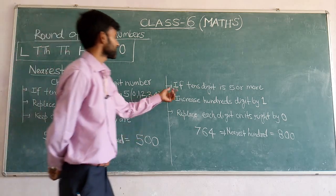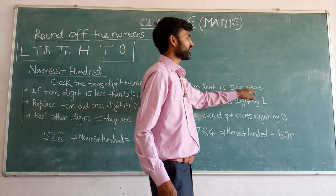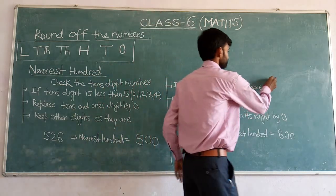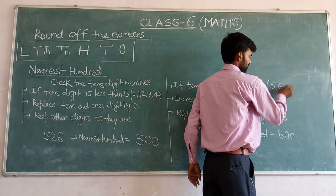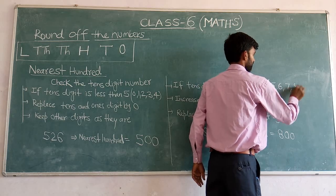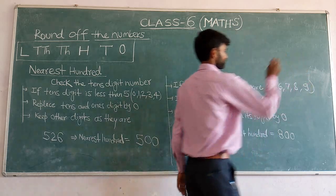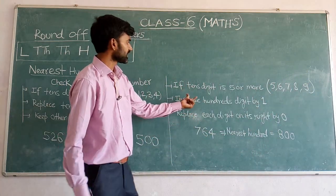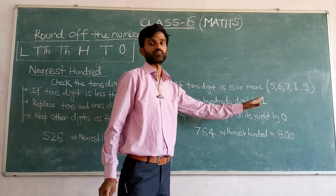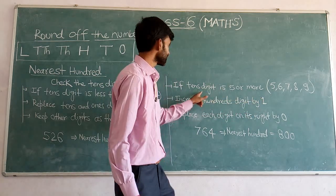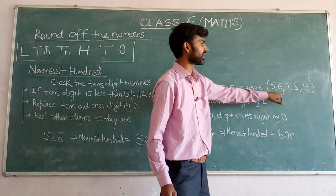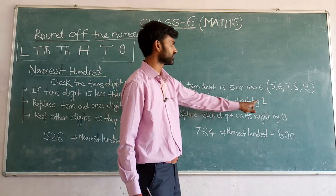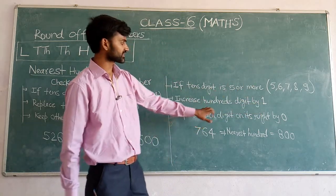Second rule: if the tens digit is 5 or more — meaning 5, 6, 7, 8, or 9 — increase the hundreds digit by 1 and replace each digit on its right by 0.